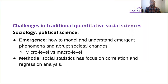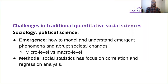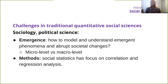Challenges in traditional quantitative social sciences: the word 'emergence' already came up, and the problematic thing was how to model and understand emergent phenomena quantitatively. There were also really fast transitions and abrupt societal changes happening, revealing a difference between what happened on the micro level and macro level. Methods were social statistics with a focus on correlation and regression analysis, making it difficult to explain abrupt emergent phenomena.